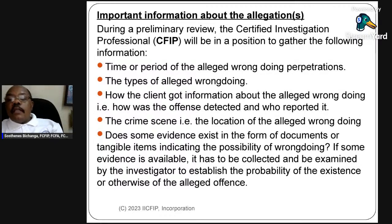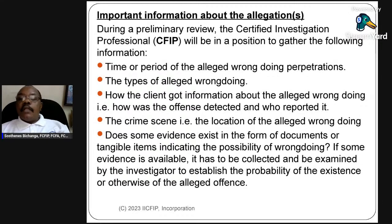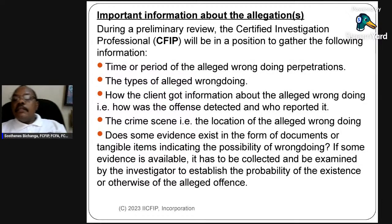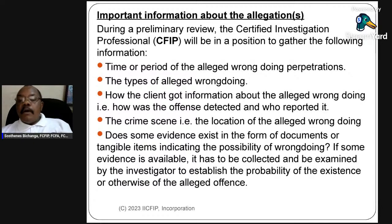Important information gathered during the preliminary review includes: the time or period of the alleged wrongdoing, the types of alleged wrongdoing, how the client got information about the alleged wrongdoing and who reported it, and the crime scene — the location of the alleged wrongdoing. The investigator also determines whether some evidence exists in the form of documents or tangible items. If evidence is available, it must be collected and examined to establish the probability of the existence or otherwise of the alleged offense.